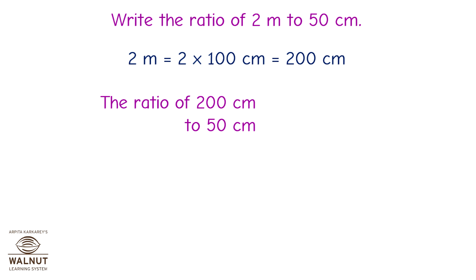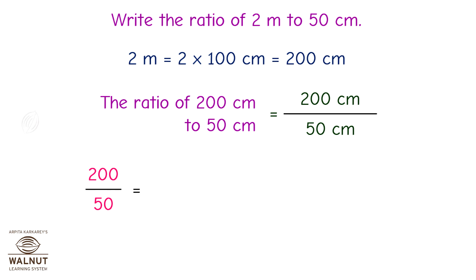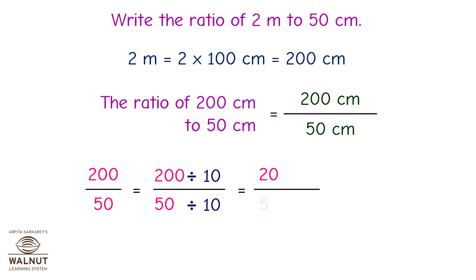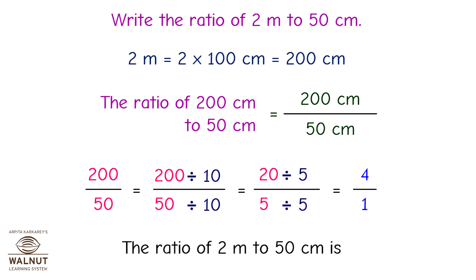Now we will write the ratio of 200 centimeters to 50 centimeters, that is 200 centimeters upon 50 centimeters. We can keep reducing this fraction as long as there are common factors. We divide the numerator and denominator by 10 and we get 20 upon 5. Then we divide the numerator and denominator by 5 and we get 4 upon 1. As we cannot divide this fraction further, this is our final answer. So the ratio of 2 meters to 50 centimeters is 4 is to 1.